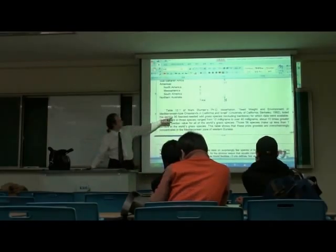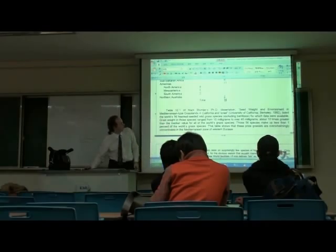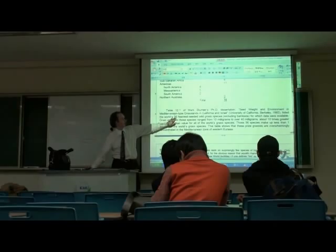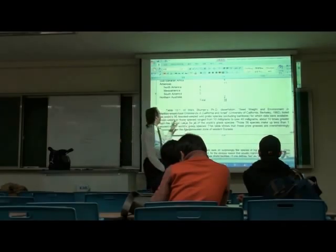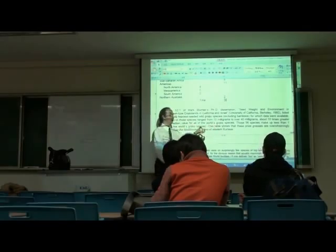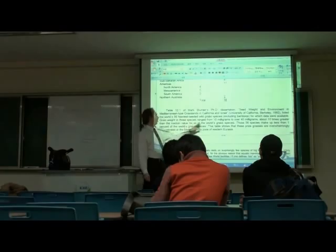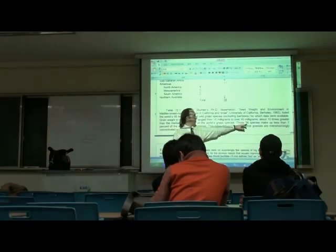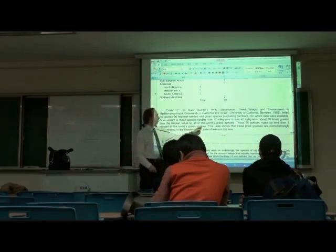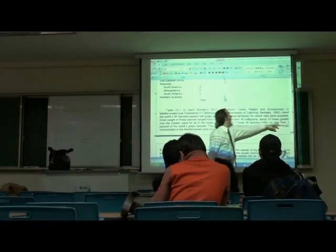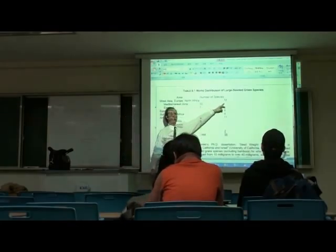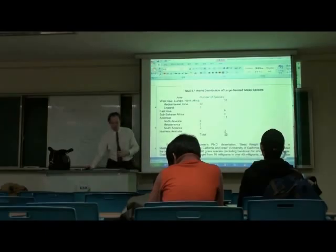However, it says here, this table 12.1 of someone's Ph.D. dissertation, Seed Weight and Environment in Mediterranean-type Grasslands. It said he looked at the world's 56 heaviest seeded wild grasses. So you can still get, where are the wild grasses in the world? And excluding bamboos, for which data were available, the grain weight in those species was 10 milligrams, very small, to a seed that was over 40 milligrams, or about 10 times greater than the average for all the world's grass species. These 56 species are less than 1% of the world's grass. But this 1%, 33 of them were in one region of the world. And he analyzes seeds in this way, and then looks at animals in this way.